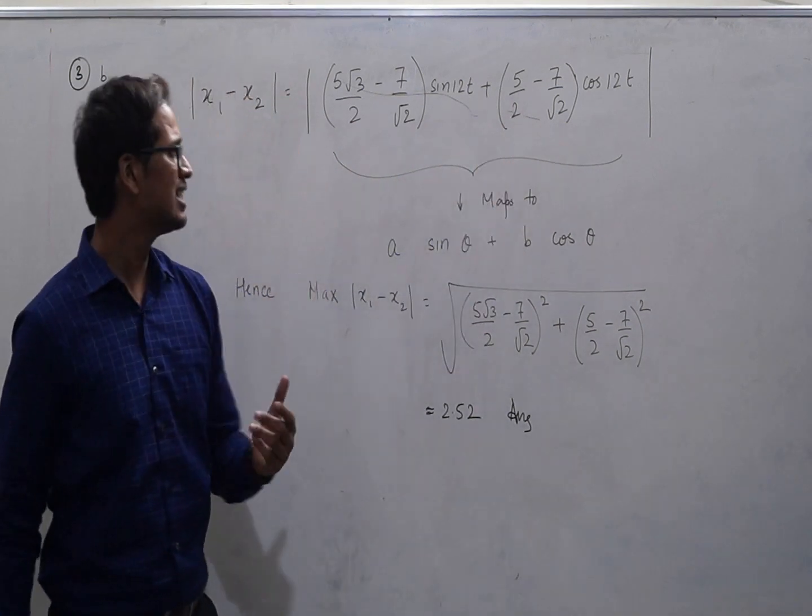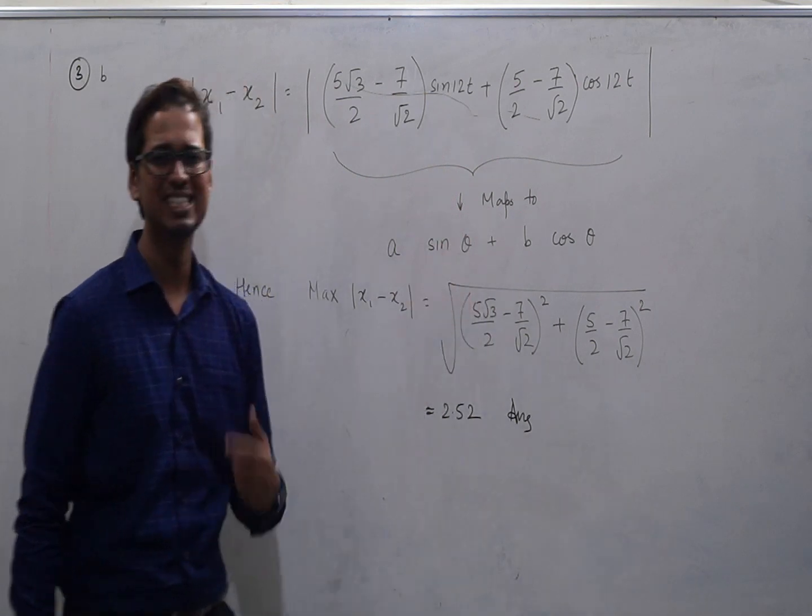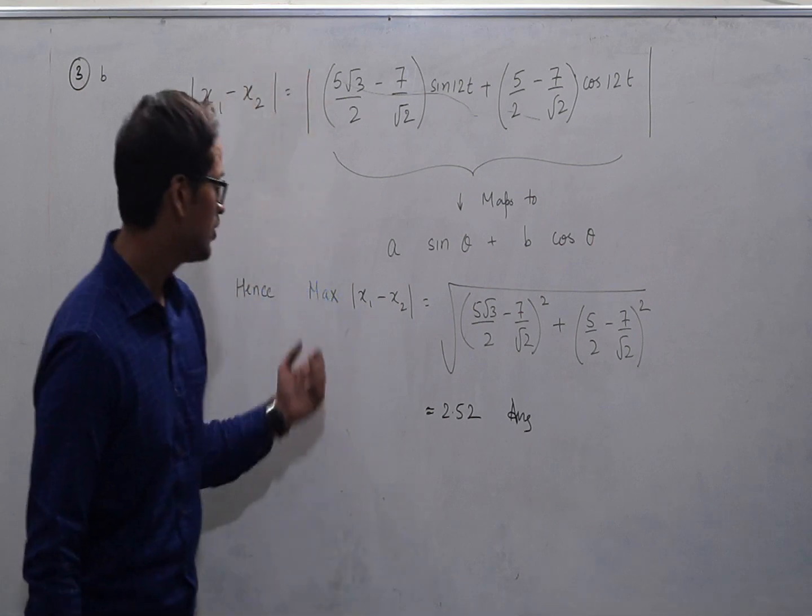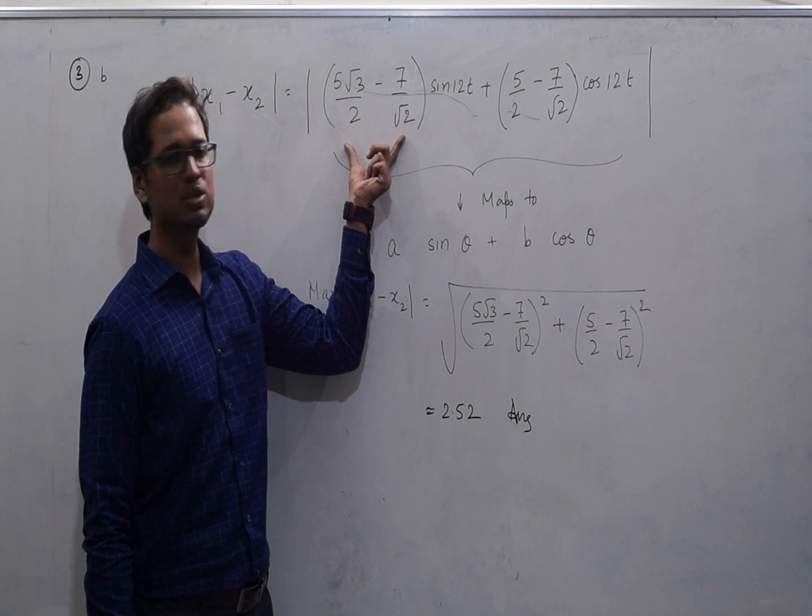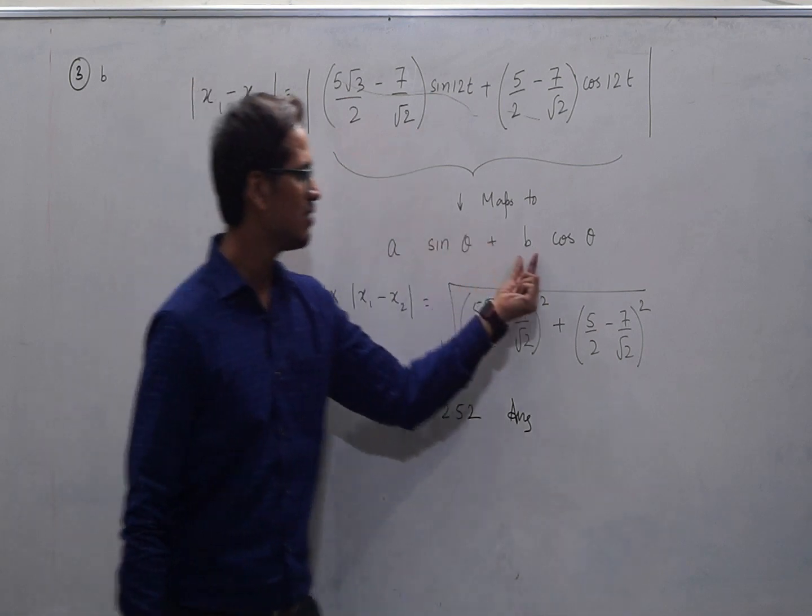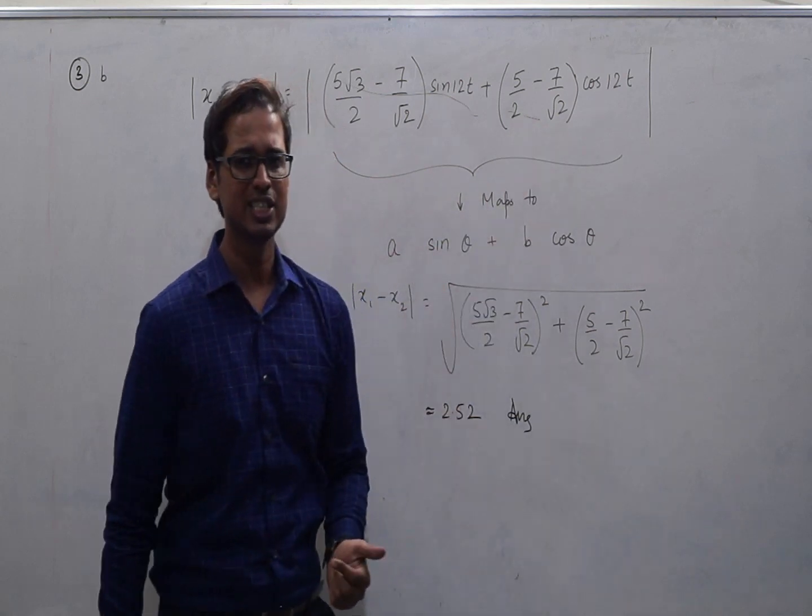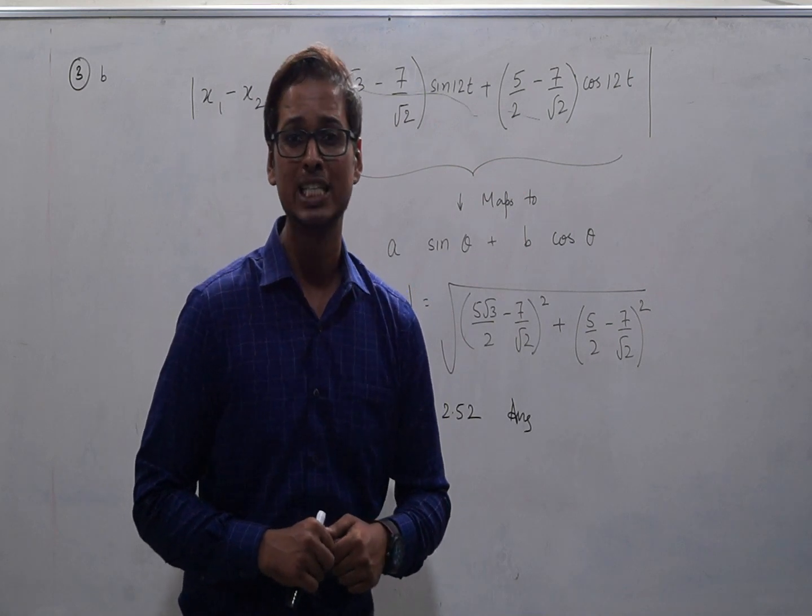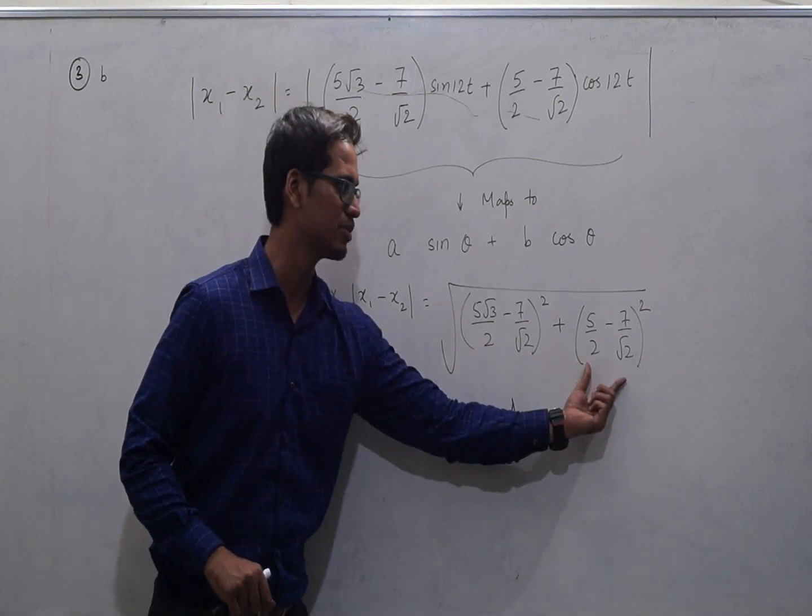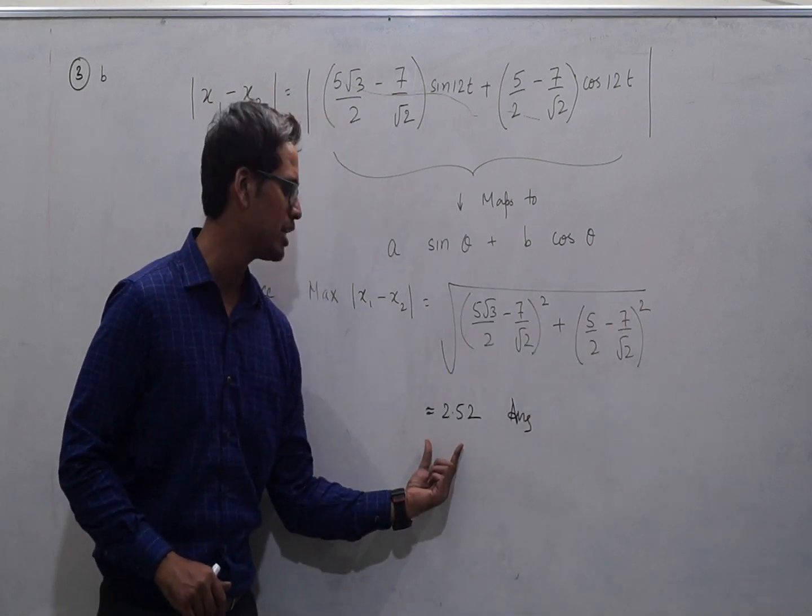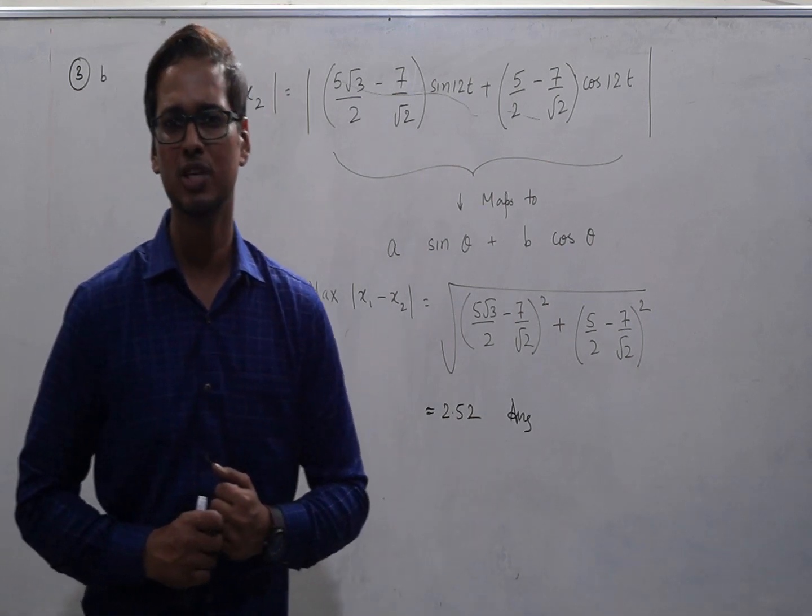Now realizing here that this expression maps exactly to the theory which we discussed, finding the maximum value of a sine theta plus b cos theta. The value of a is being represented by this term which is 5 root 3 by 2 minus 7 by root 2, and the value of b here is 5 by 2 minus 7 by root 2. So as we discussed in the theory, the maximum value was under root of a square plus b square. That gives you under root of this expression whole square plus this expression whole square, which if you simplify on your calculator will come out to be approximately 2.52. So this was your answer to part b of the question.